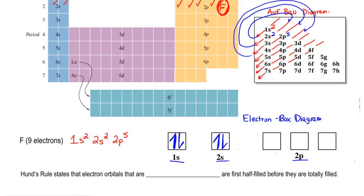Hund's rule states that electron orbitals that are degenerate, so remember that word degenerate, are first half filled before they are totally filled. Degenerate just means that they have the same amount of energy. We know that these three electron orbitals have the same energy because they're all 2 orbitals, and they're all p orbitals, so they're all 2p orbitals.